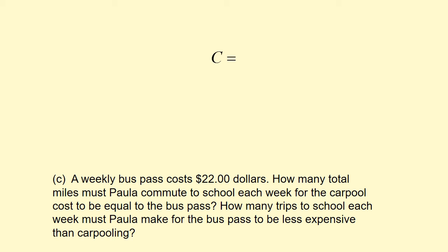Part C asks something a little different, but nothing we haven't already seen. You will have simplified the formula — which if you remember was C equals one-half and then a bunch of stuff in parentheses — into another formula. The M is still going to stay in there because we don't know what M is yet; we're still making a formula with M. Hopefully you used that formula to plug M in for part B. So in part C, you'll have a simplified formula with M.